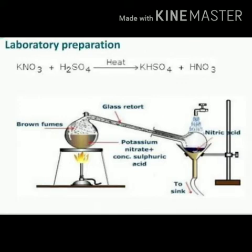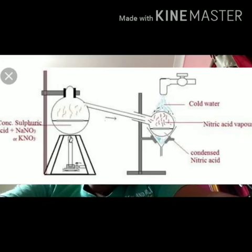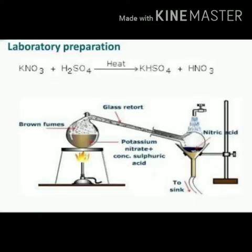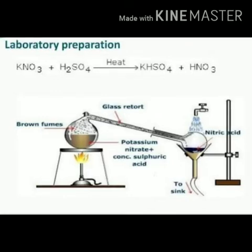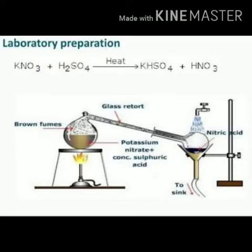Looking at the diagram, you can see how nitric acid is prepared in the laboratory. The apparatus consists of a glass retort containing potassium nitrate or sodium nitrate and concentrated sulfuric acid, clamped in position with a burner placed under the retort. Nitric acid vapors are collected in a receiver and cooled down using cold water from a tap.